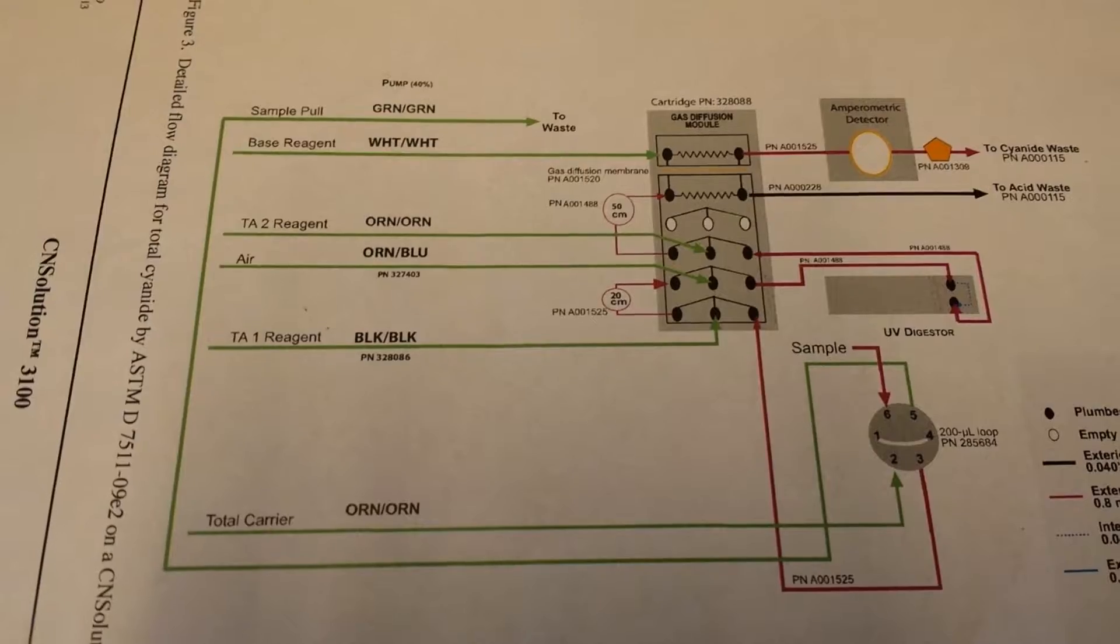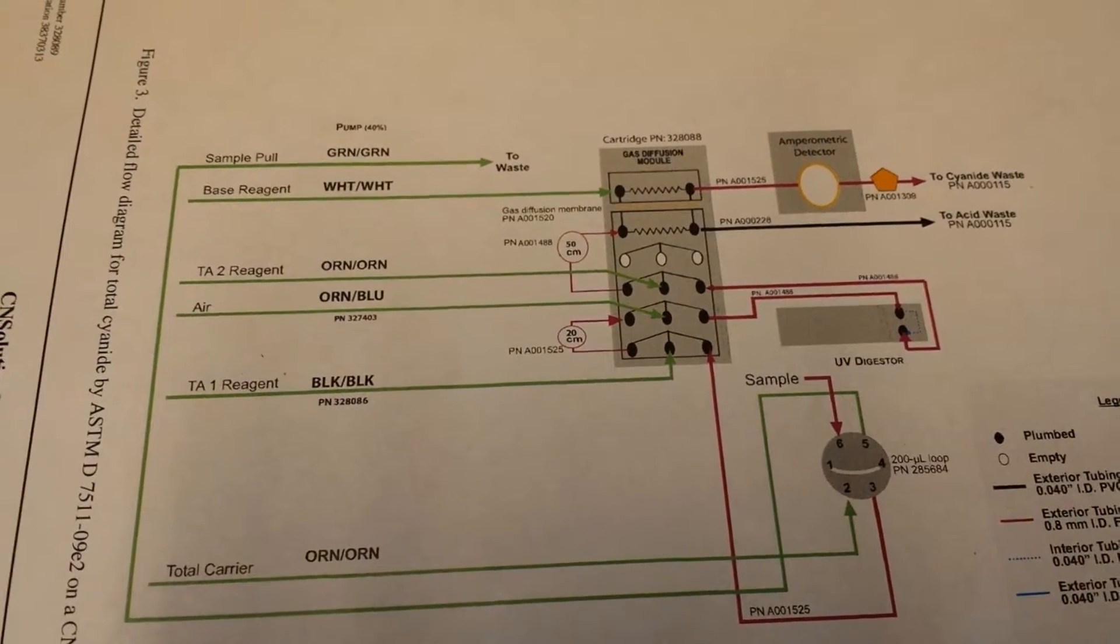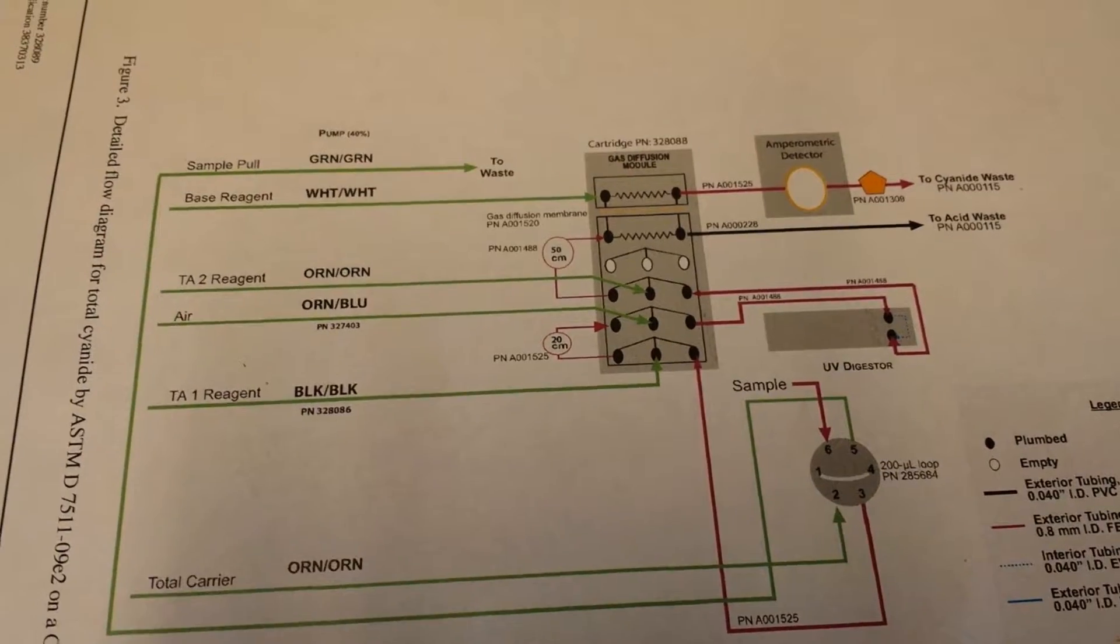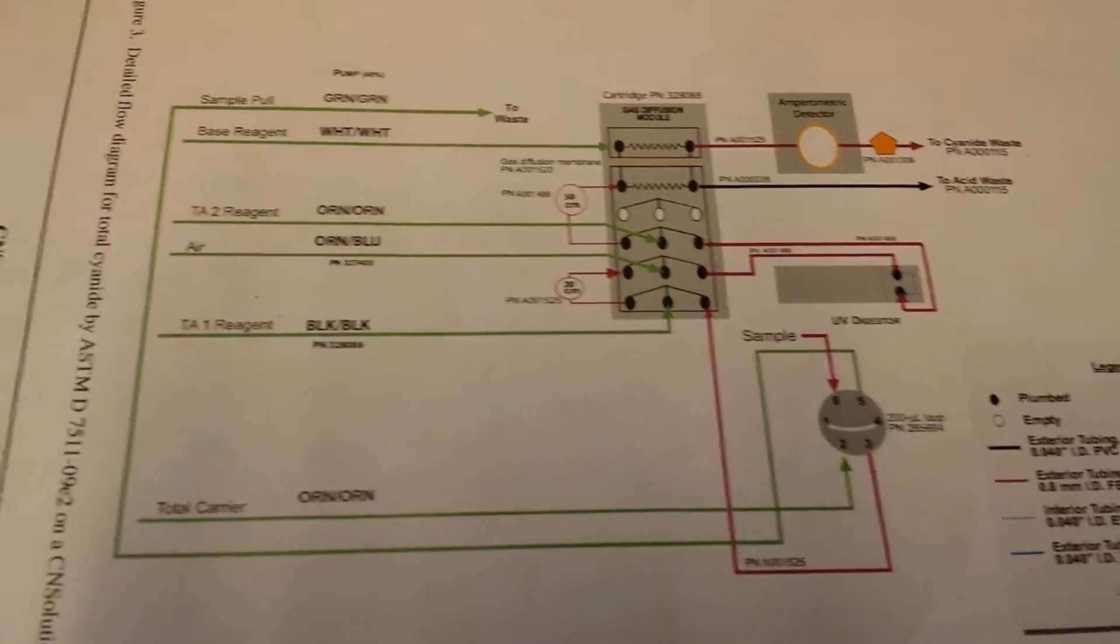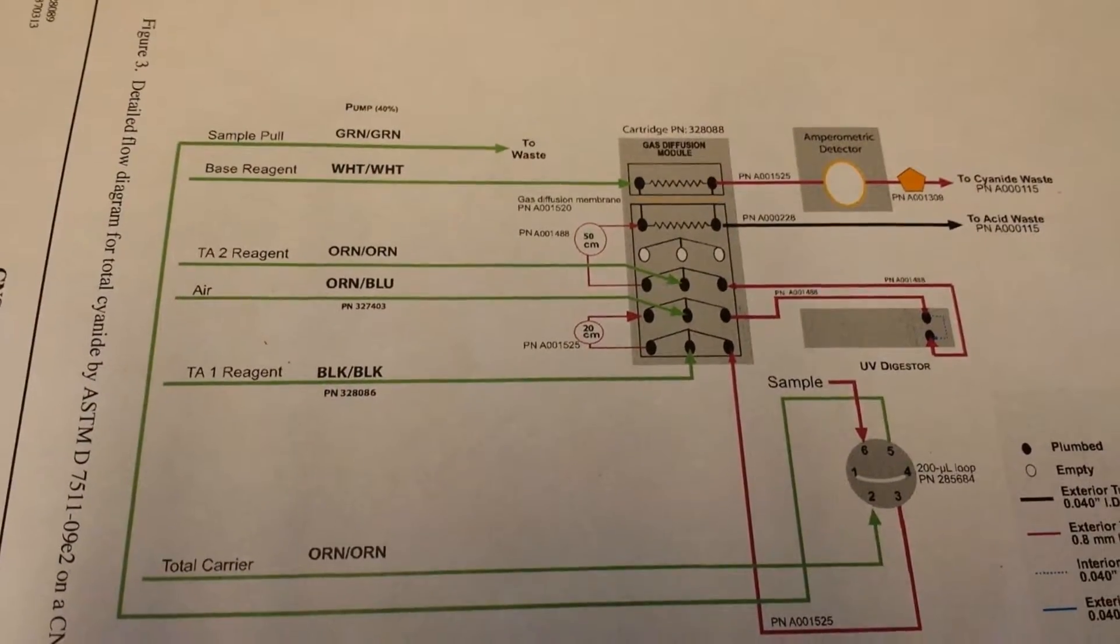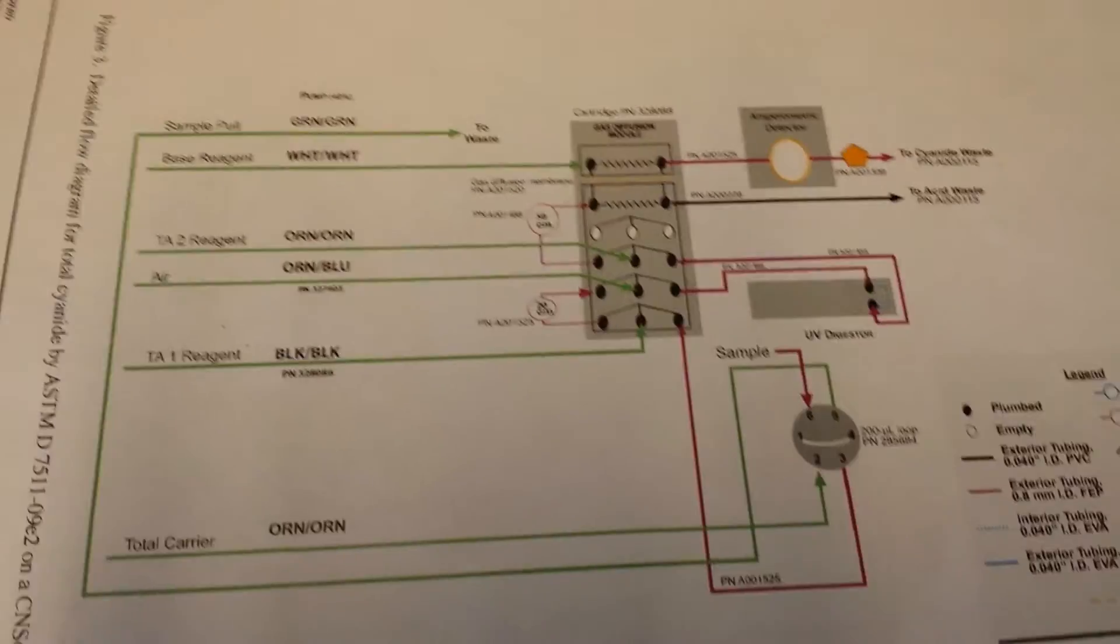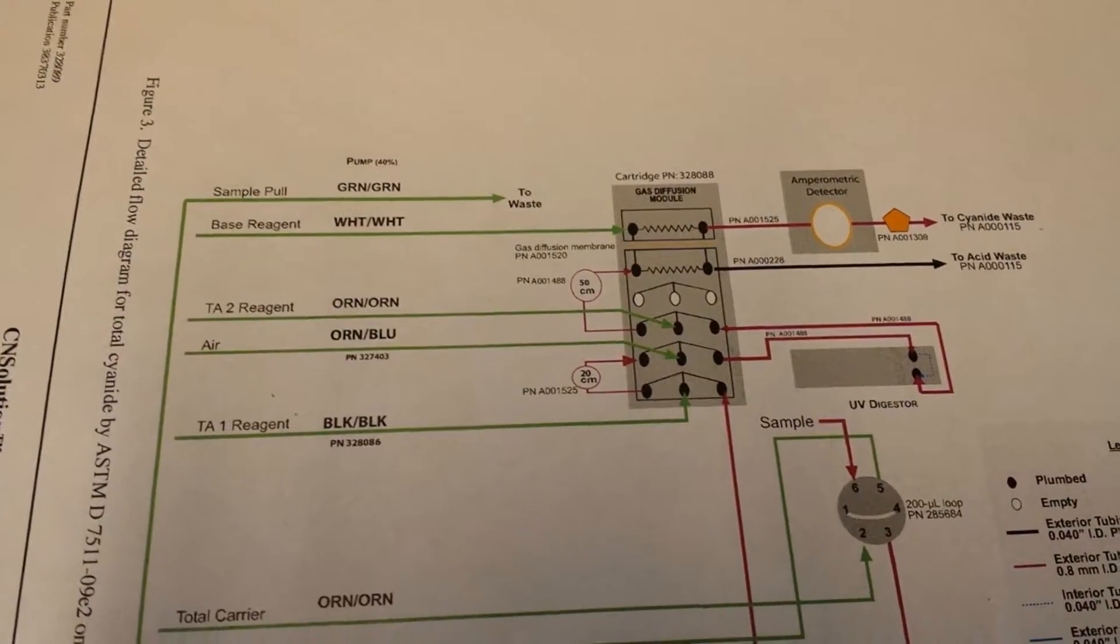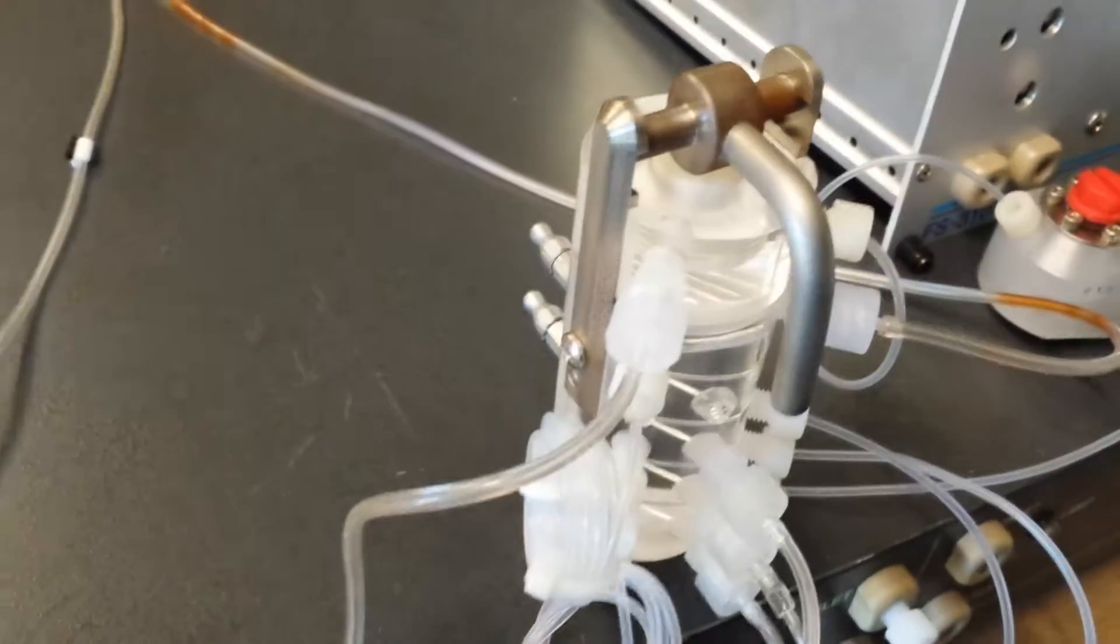Right now it's plumbed with Total, which uses the black tubing for TA1 and then a small orange-blue airline. It sends it off to the UV digester, returns and gets orange TA2, and the base is being pumped across the top of the gas diffusion module.